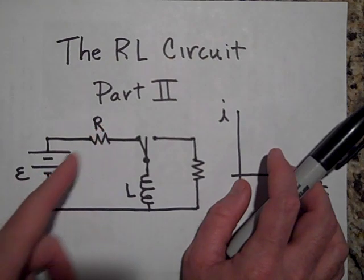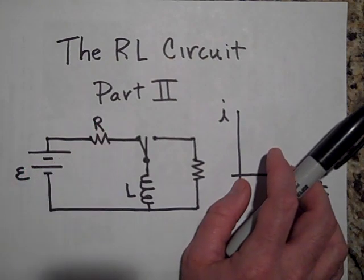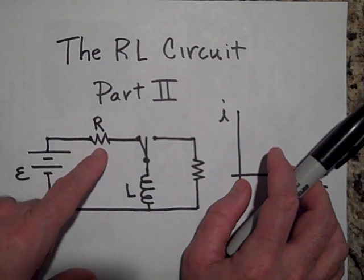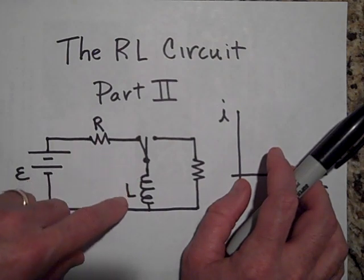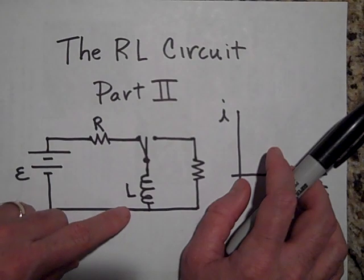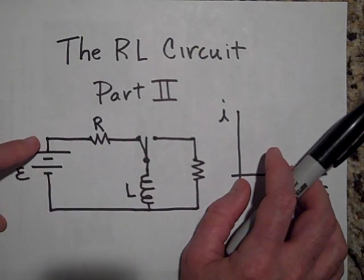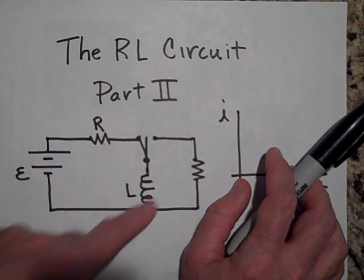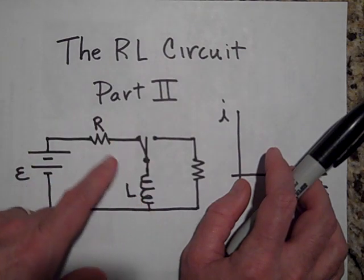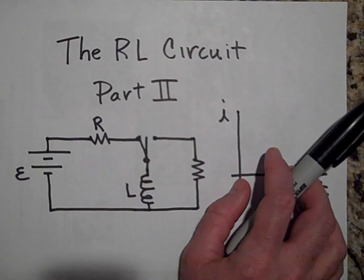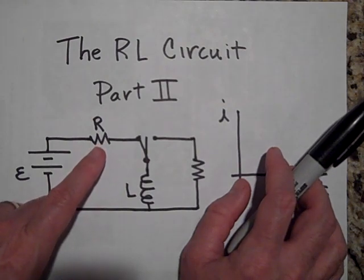The steady state current is going to be E over R using Ohm's law, because eventually this will have no voltage across it. So if this is E, like six volts or something, then according to Kirchhoff's loop rule, if that has no voltage then this has to have the six volts, and so the current in here would be the six volts over the resistance.